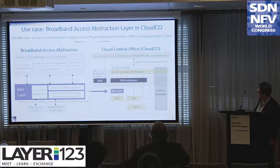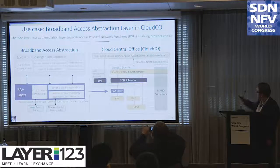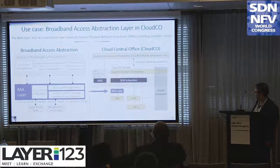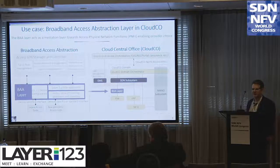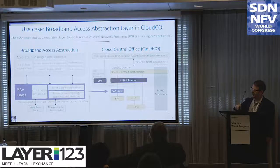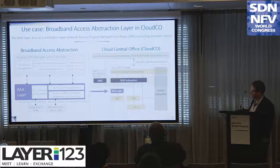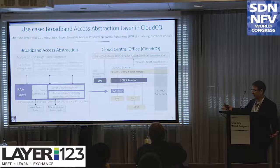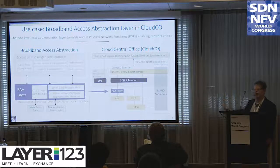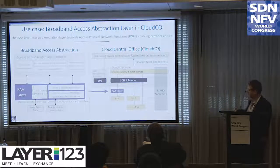On the left we have the access abstraction, and on the right the cloud central office — you can see how it fits in and how we developed the various interfaces. A lot of how BAA started was that for some time we'd been developing YANG models for management in access. This was the logical step between doing interface documents and agile development of BAA. We developed YANG management models for even old DSL technologies, for G.fast, G-PON, XGS-PON, and various other management interfaces — and we basically reused those YANG models in BAA.